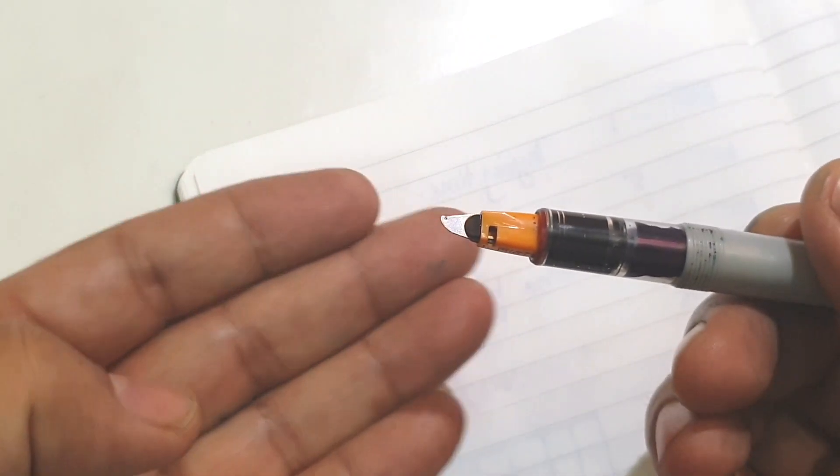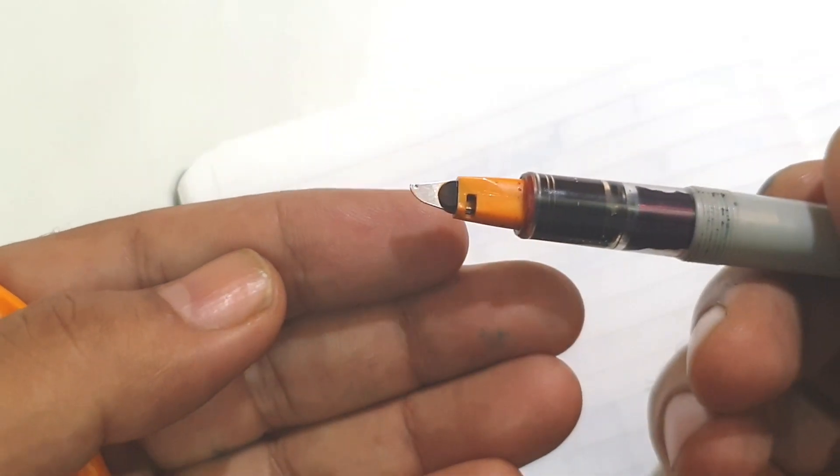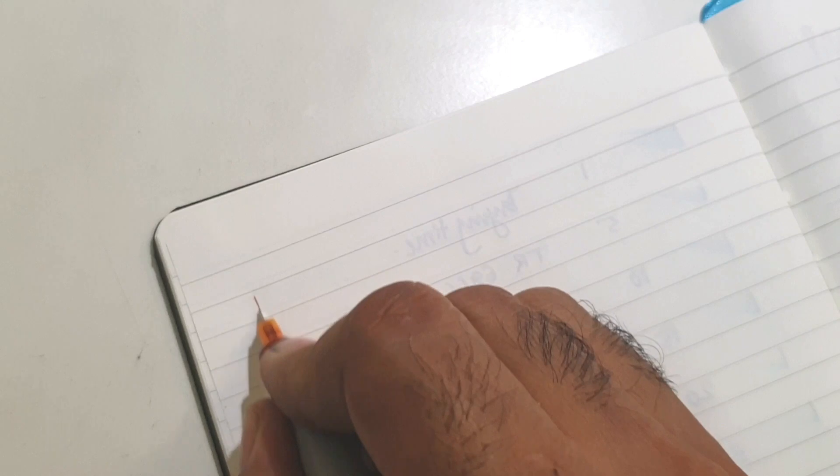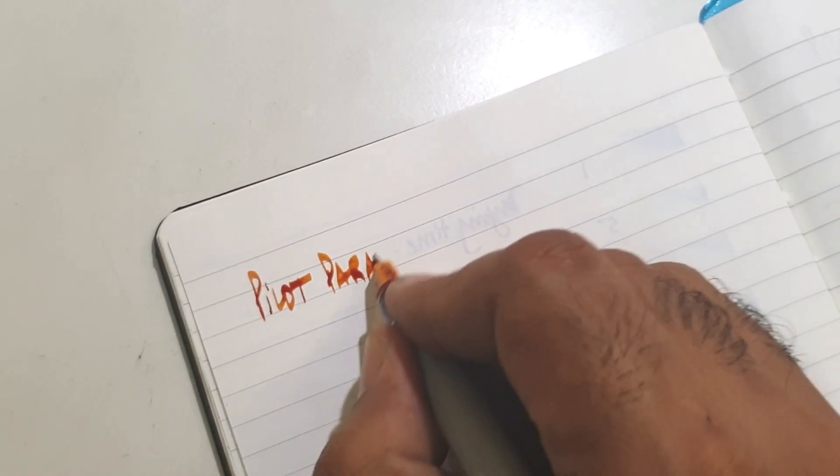Let's come to a rolling nib modification of a pilot parallel. You can see that the sharp bevel, the sharp edge has been taken off and it has been ground to a smooth contour and let's see how this writes.